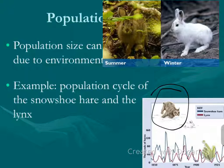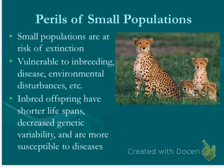If we assume that trappers took a certain percentage of the available animals every year, then based on the number of pelts collected you can estimate how many animals there were. What they found was that every time snowshoe hares spiked, a few years later there was a spike in the lynx population. Then lynx would really spike, and snowshoe hares would drop. Small populations are constantly at risk of extinction — they're vulnerable to inbreeding, disease, and environmental disturbances. Inbred offspring have shorter lifespans, decreased genetic variability, and are more susceptible to diseases.